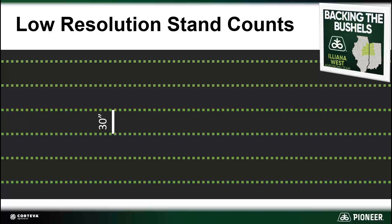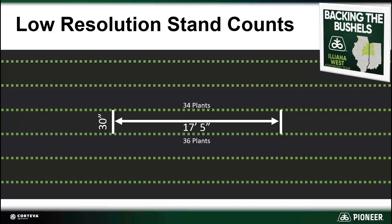For example, if we have 30-inch corn rows and we measure off 17.5 feet — which equals 1/1,000th of an acre — we can count the number of corn plants in each adjacent row. The first row has 34, the second 36, that's an average of 35. We multiply this by 1,000, which gives us 35,000 plants per acre. So essentially our resolution for this stand count is 1/1,000th of an acre, and this can be repeated in several areas of the field.